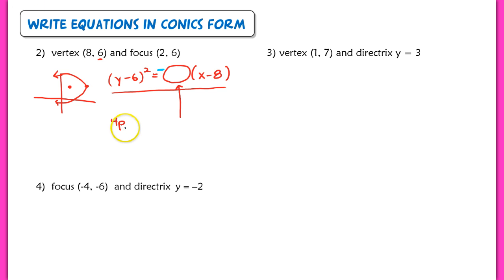Now all we have left to do is figure out what our p-value is. Now p is the distance between your focus and your center, so if we go back to the coordinates here, the distance between 8, 6, and 2, 6, well that is a total of 6 units long. So if p is 6, we multiply 6 times 4, and we end up with 24. So this would be the general form for this parabola in conics form.